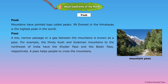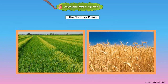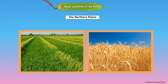A pass helps people to cross the mountains. Valley. A low-lying area between hills or mountains is called a valley. Valleys are formed by the river flowing through them, and the river makes the valley fertile. Kashmir and Switzerland are two of the most beautiful valleys in the world. The northern plains stretch from the Indus Valley in the west to the Brahmaputra Valley in the east. Since many rivers flow through the plains and bring rich soil, the northern plains are very fertile.